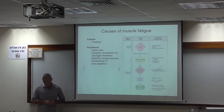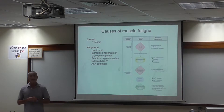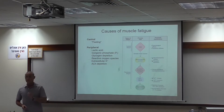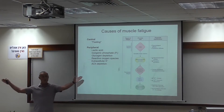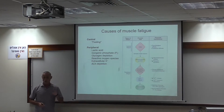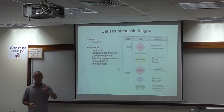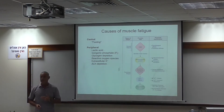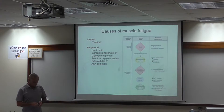Most people are aware of the belief that lactic acid results in muscle fatigue. Lactic acid is a strong acid, which means that at physiological pH, it will dissociate completely into the lactate anion and hydrogen ion. There is little evidence to support that the lactate anion causes interference with muscle force production. On the other hand, there is considerable evidence that hydrogen ion does interfere with muscle performance.